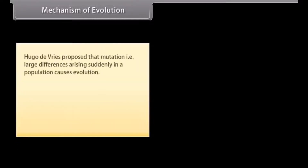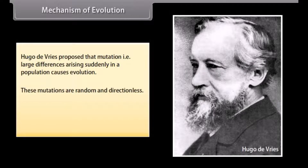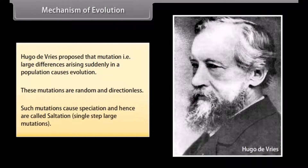Hugo de Vries proposed the mechanism of mutation — that is, large differences arising suddenly in a population cause evolution. These mutations are random and directionless. Such mutations cause speciation and hence are called saltation, that is, single-step large mutations.